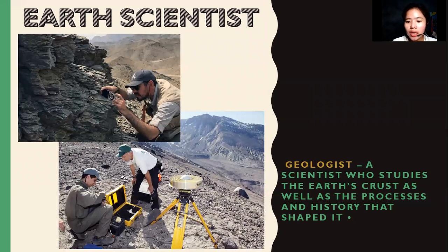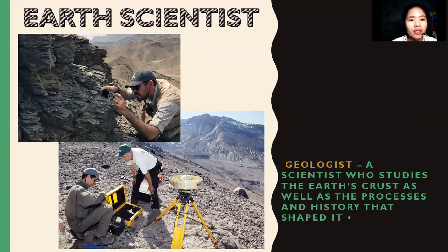Earth scientists include geologists — scientists who study the earth's crust as well as the processes and history that shape it. They are the scientists who study and determine the history or existence of the earth by checking, analyzing, and gathering data from the surface or crust of the earth.